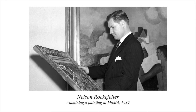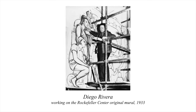The Rockefellers wanted to have a mural put on the ground floor wall of the Rockefeller Center. Nelson Rockefeller wanted Henry Matisse or Pablo Picasso to do it because he favored their modern style, but neither was available. Diego Rivera was one of Nelson Rockefeller's mother's favorite artists and therefore was commissioned to create the huge mural. He was given a theme: Man at the Crossroads, looking with hope and high vision to the choosing of a new and better future.